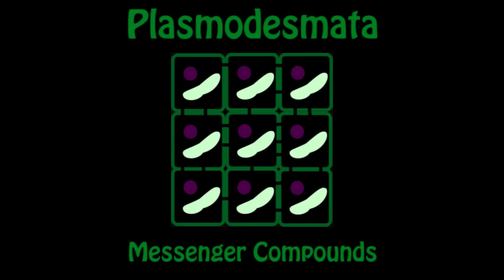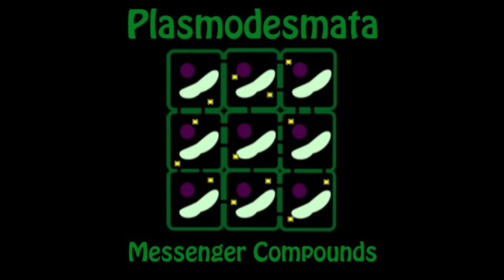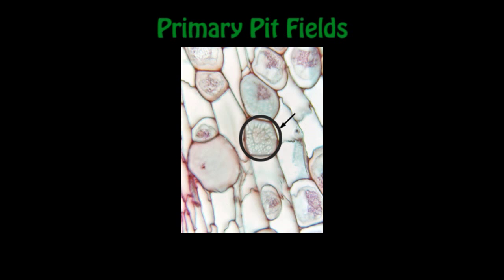Plasmodesmata are small holes or channels that allow chemical compounds to travel between plant cells. Plasmodesmata exist by themselves and also in clusters named primary pit fields. The plasma membrane passes through the plasmodesmata, forming one membrane throughout the entire plant.